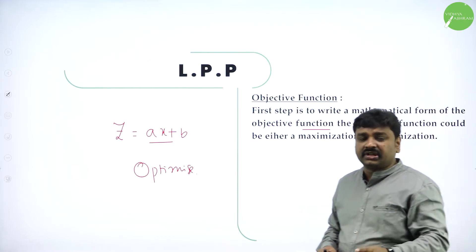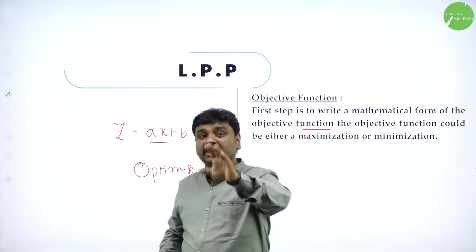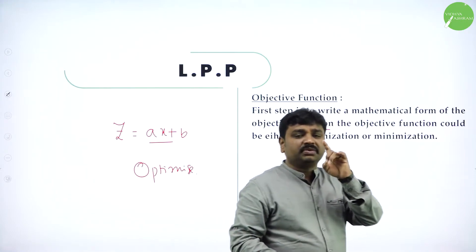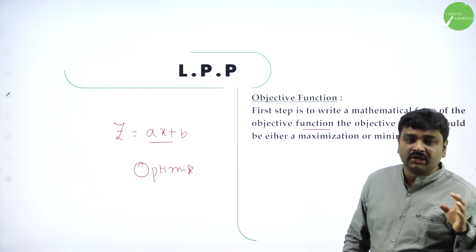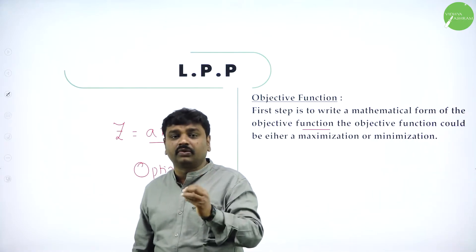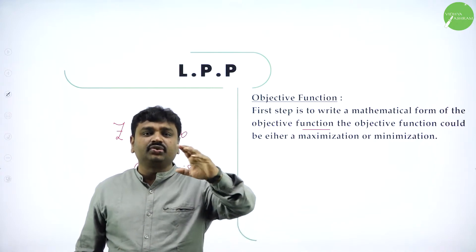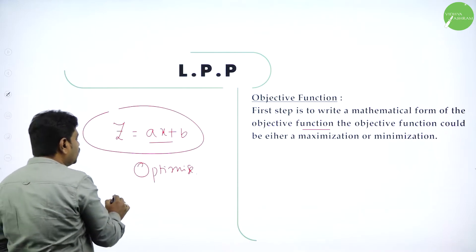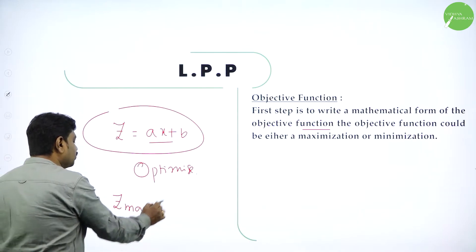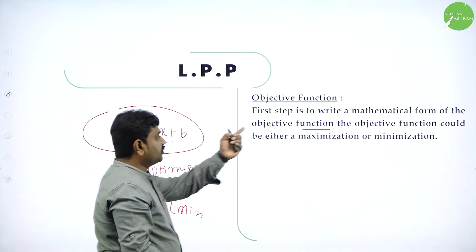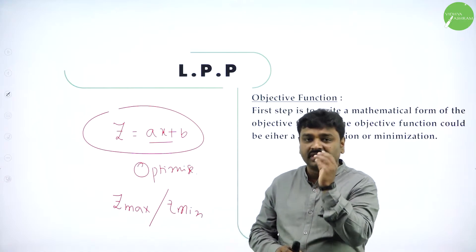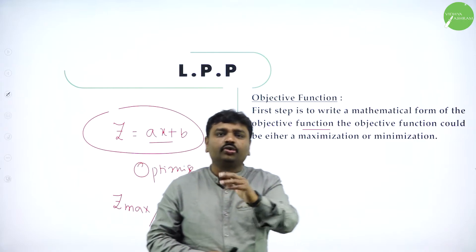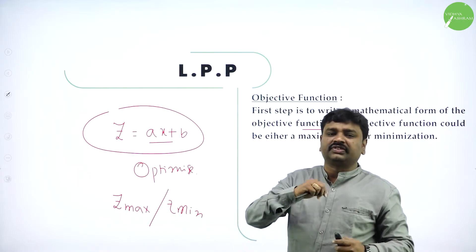They'll give a situation or a problem — convert the problem to a linear programming problem. The first step in converting it into LPP is formulating the LPP. First step: write the objective function. Read the question and write it. The objective function is the function you need to maximize or minimize, generally written as Z = AX + BY. Sometimes we need to find Z maximum, sometimes Z minimum.